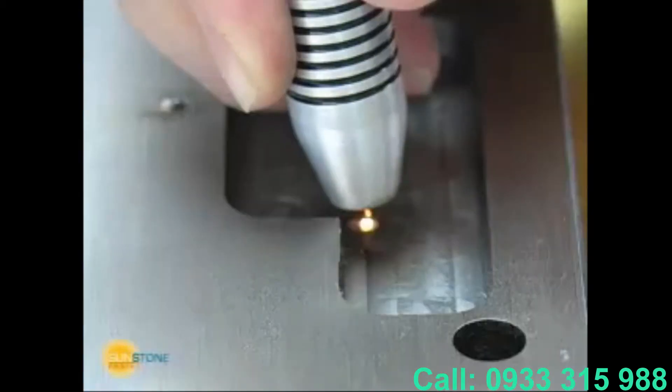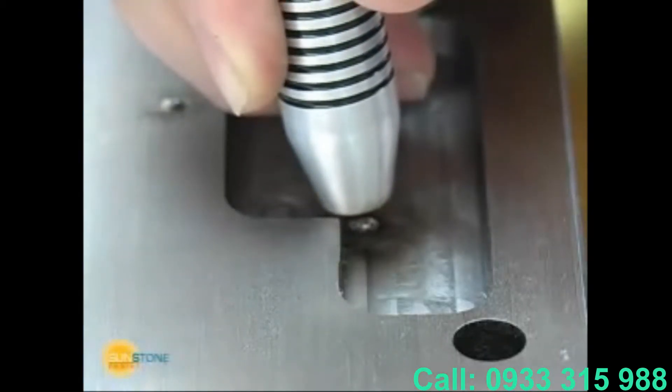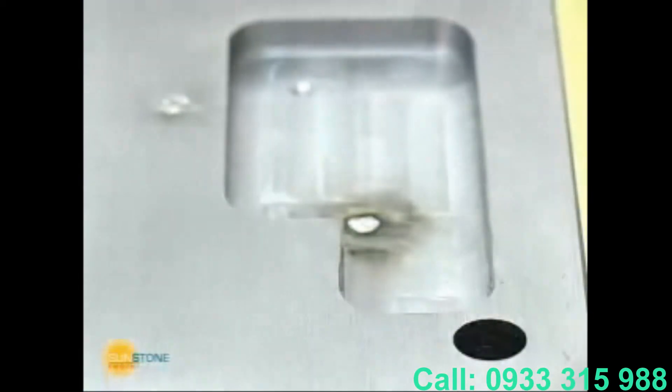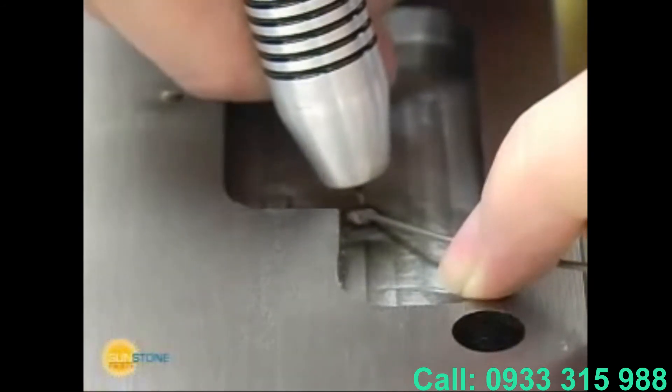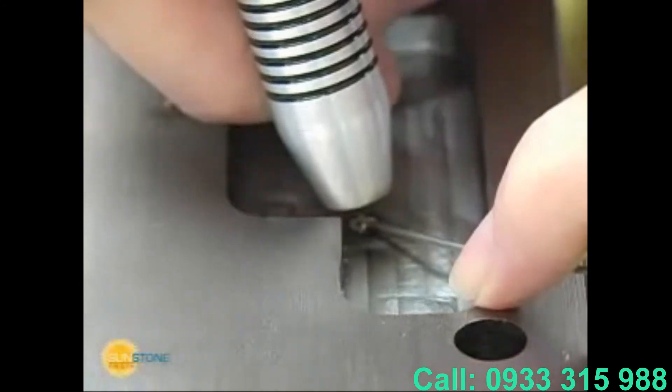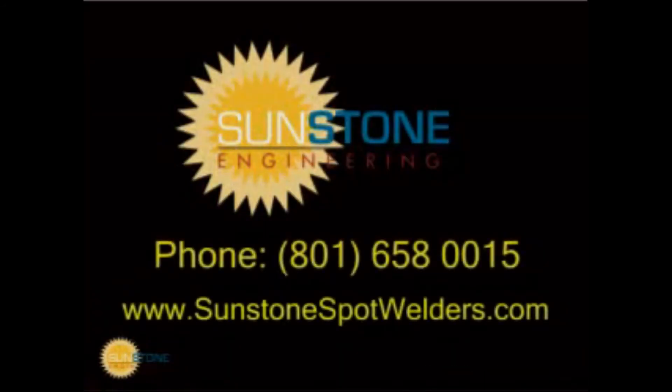The Orion PA-230 is perfect for mold and die repair. Increase your profitability using this affordable and precise welding solution. The Orion does the job of a micro-tig with the finish and ease of laser welding. For more information, contact Sunstone Engineering.